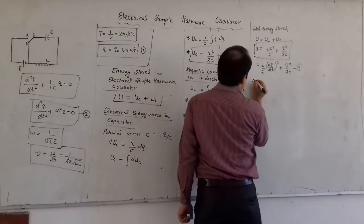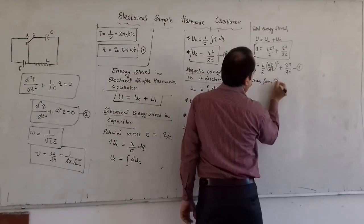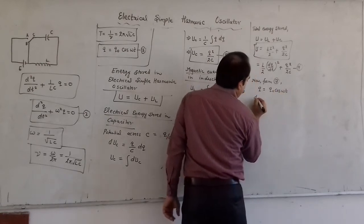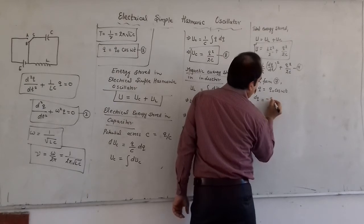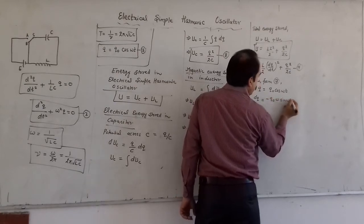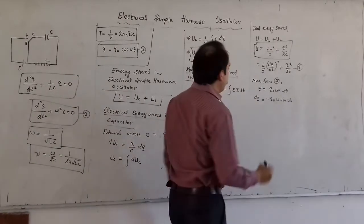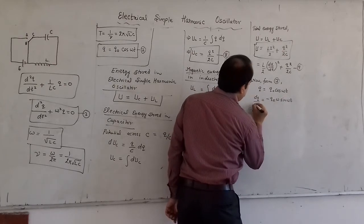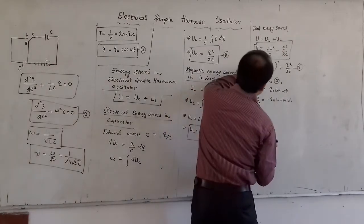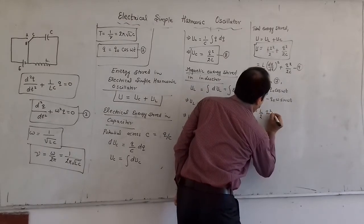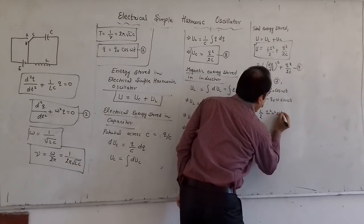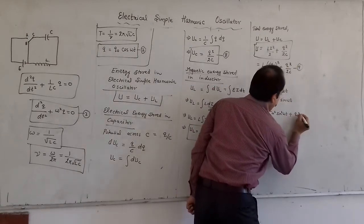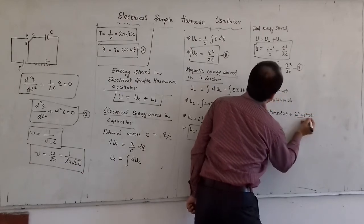From equation 7, Q = Q₀cos(ωt), therefore dQ/dt = −Q₀ω sin(ωt). Substituting these values into equation 9, we get U = (L/2)·Q₀²ω²sin²(ωt) + Q₀²cos²(ωt)/(2C).